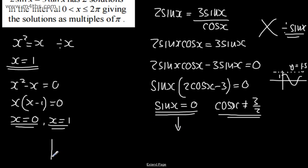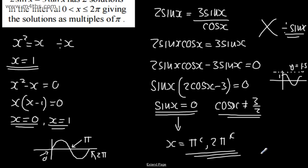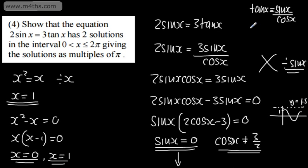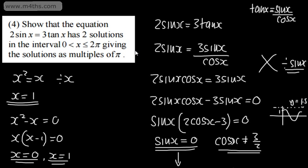So we solve sinx = 0. Looking at the sine graph in radians, sinx = 0 at x = π and x = 2π within 0 to 2π (not inclusive of 0). So x = π and x = 2π — our two solutions as multiples of π. To summarise: we wrote tanx = sinx/cosx, multiplied through by cosx, factored out sinx, discarded cosx = 3/2 as having no real solutions, and solved sinx = 0 in the interval. Those are our four exam-style questions on trigonometry.